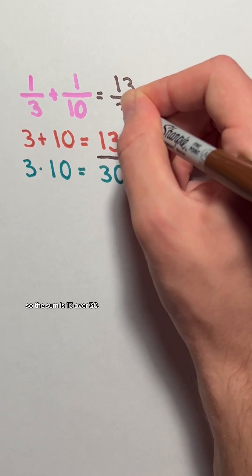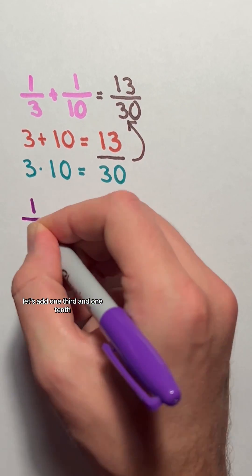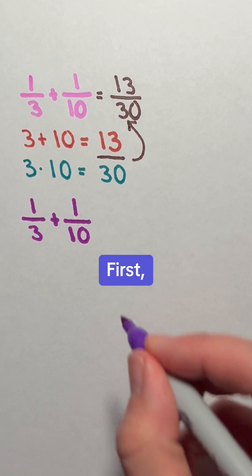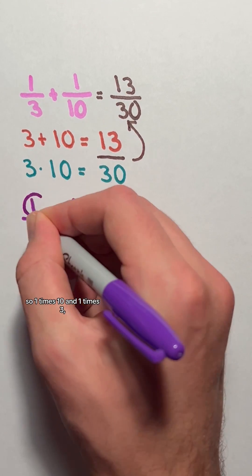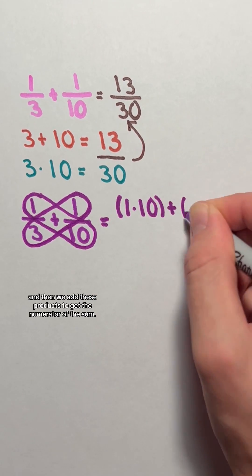To show why this trick only works with unit fractions, let's add 1/3 and 1/10 normally with the butterfly method. First, we'll cross multiply, so 1 times 10 and 1 times 3. And then we add these products to get the numerator of the sum.